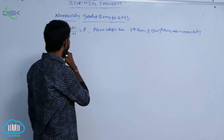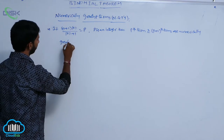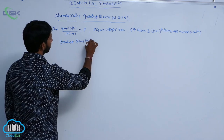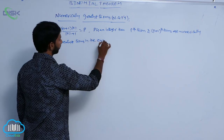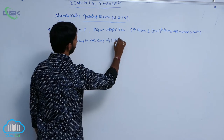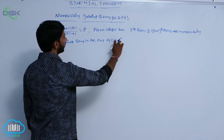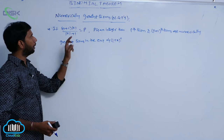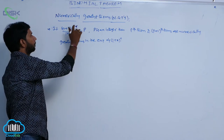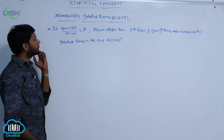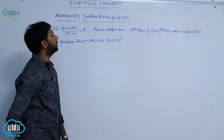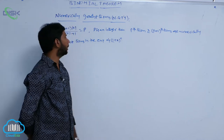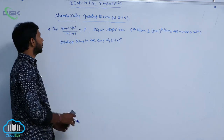These numerically greatest terms are in the expansion of 1 plus x whole power n. So if (n+1) times mod x by mod x plus 1 equals P, and P is an integer, then the P-th term and P plus 1-th terms are numerically greatest terms in the expansion of 1 plus x whole power n.